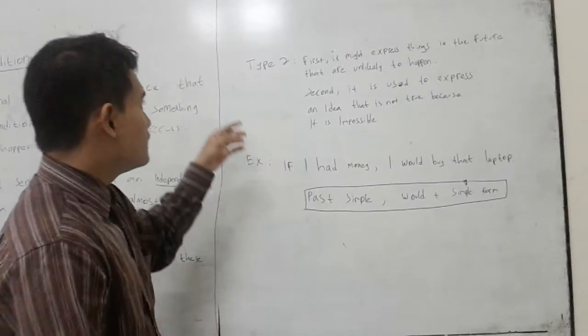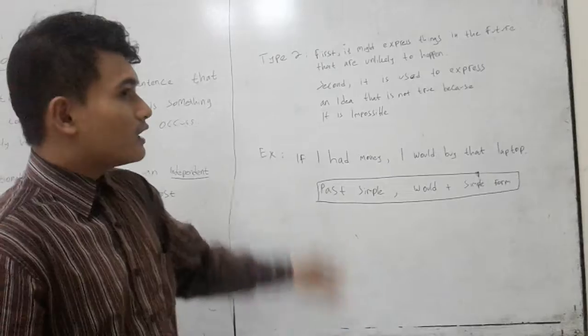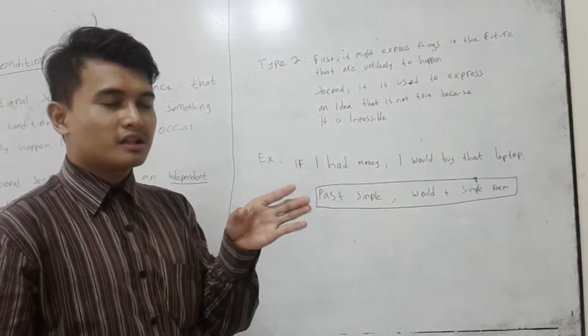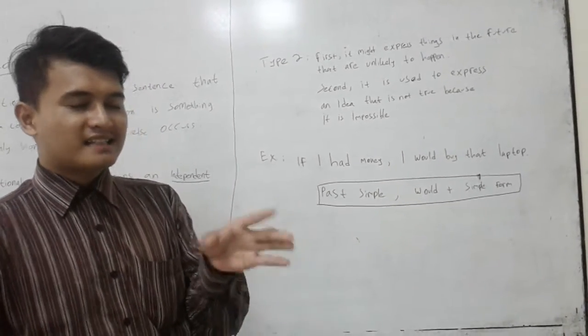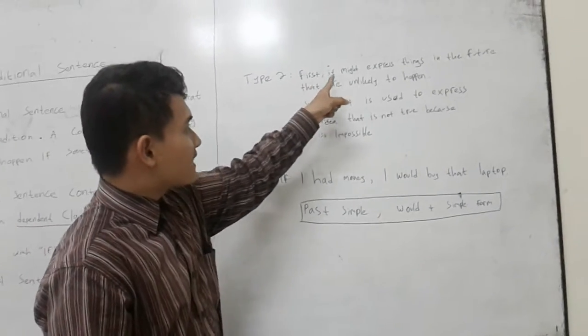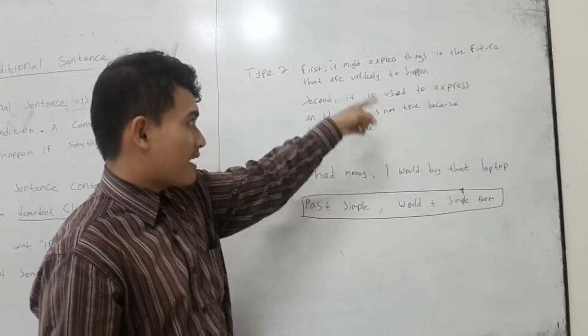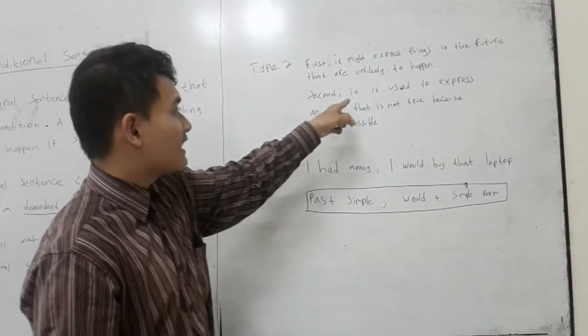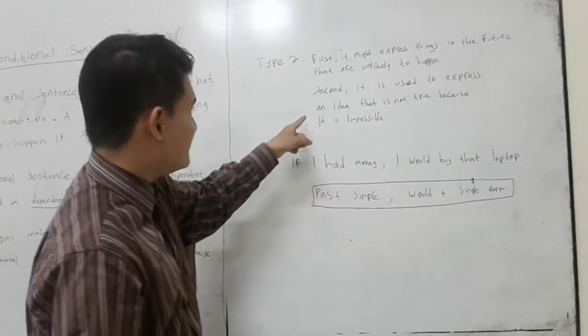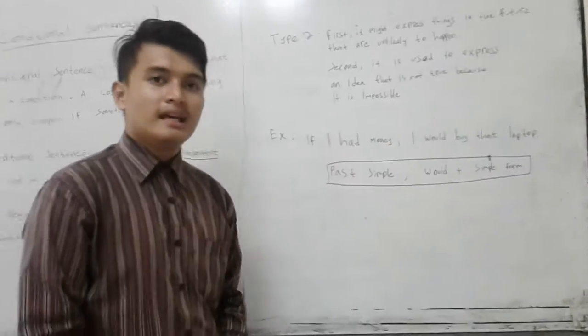Type 2 conditional sentence can express two ideas. First, it might express things in the future that are unlikely to happen. Second, it is used to express an idea that is not true because it is impossible. For example: